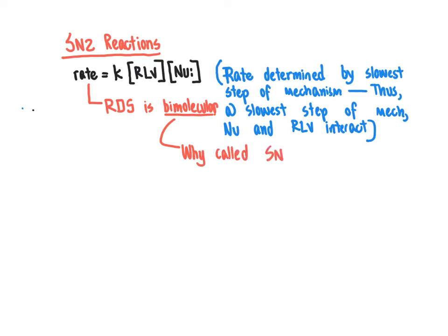As a spoiler, the SN1 reaction mechanism is called SN1 because its rate-limiting step is going to be unimolecular. For the SN2 reaction we're talking about now, we have to devise a mechanism that fits this particular rate equation, where the slowest step involves the coming together of the nucleophile and the electrophile. We could measure this experimentally by running trials with different concentrations of nucleophile and electrophile, and we would find that the rate is proportional to both in the case of SN2.